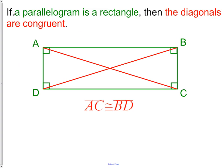Here's a big one. If a parallelogram is a rectangle, then the diagonals are congruent, meaning AC, the long segment that connects this vertex to this vertex, is congruent to BD, which is in this direction. So those diagonals are congruent to each other.